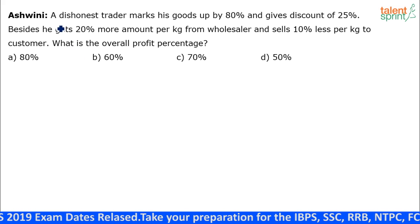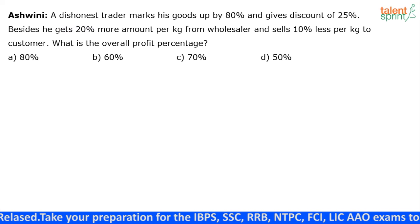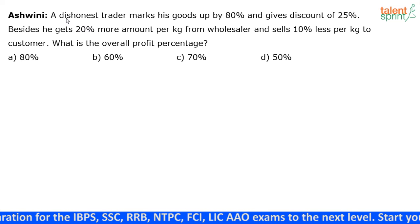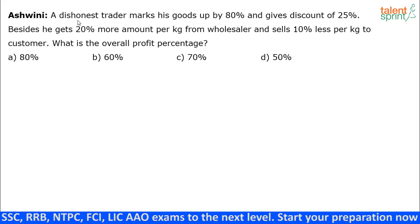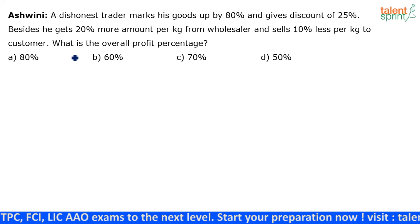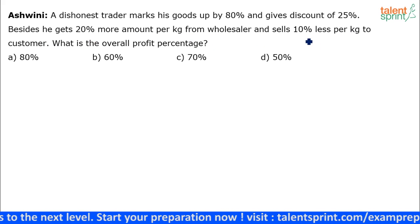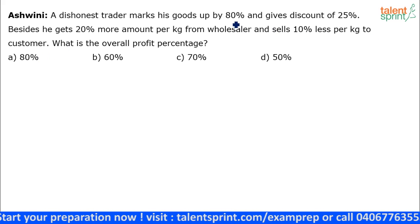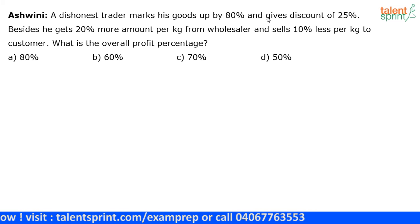If you recall the concepts covered in the profit and loss video, we discussed both question types separately — here it's a combination of the two. You remember the popular dishonest dealer question where he claims to sell at cost price but gives a lesser quantity. That part is covered here: he gets 20 percent more from the wholesaler but sells 10 percent less per kg to the customer. We've also discussed markup price and discount, so both combinations have to be used together here.